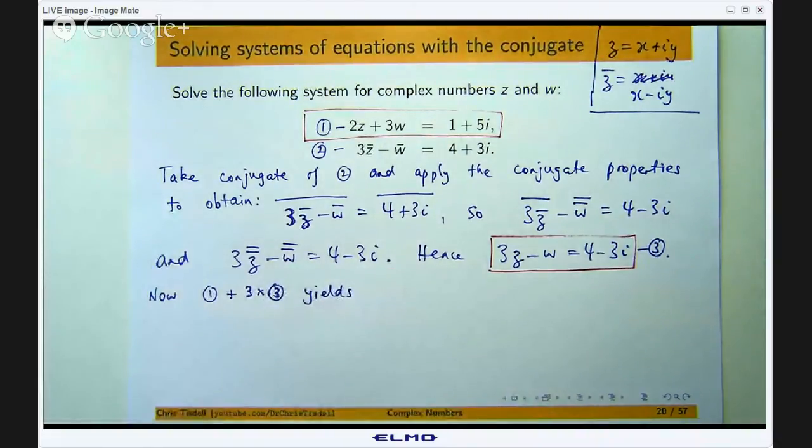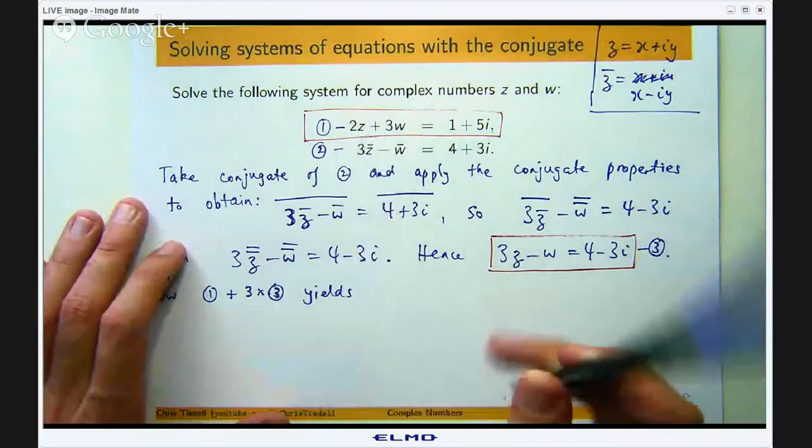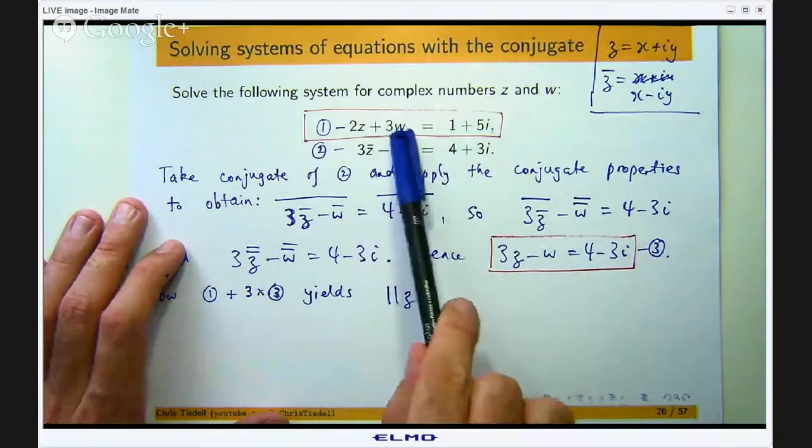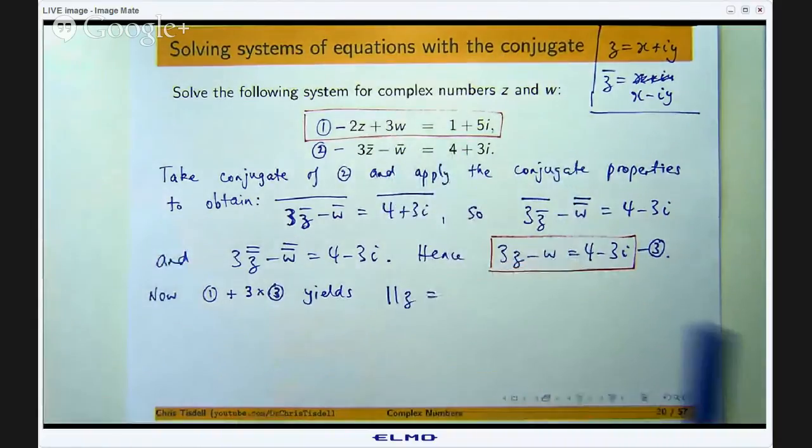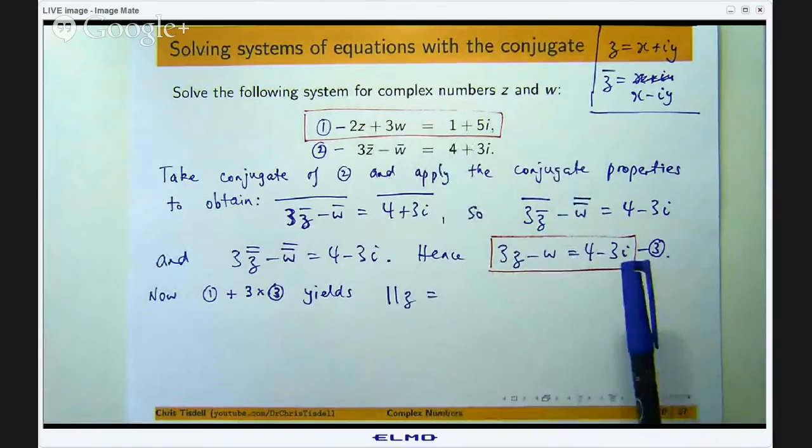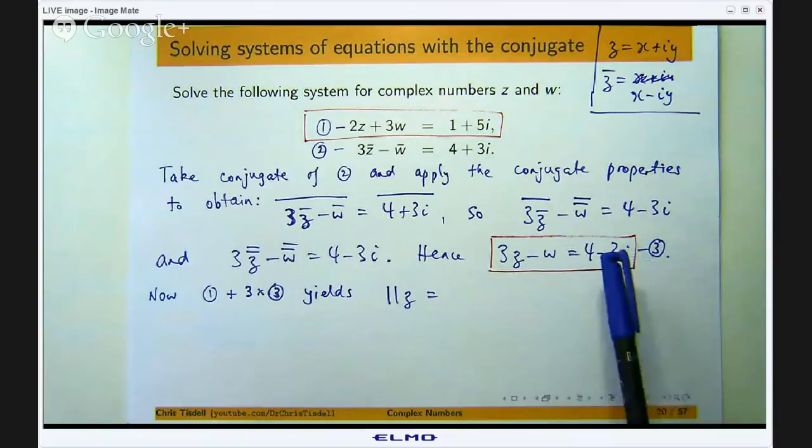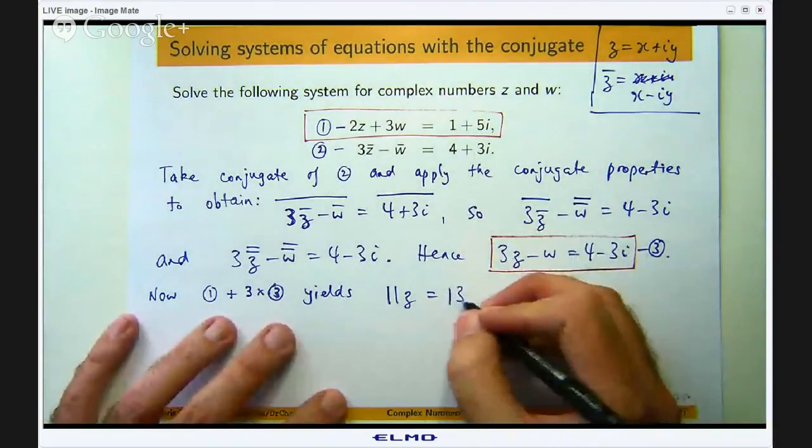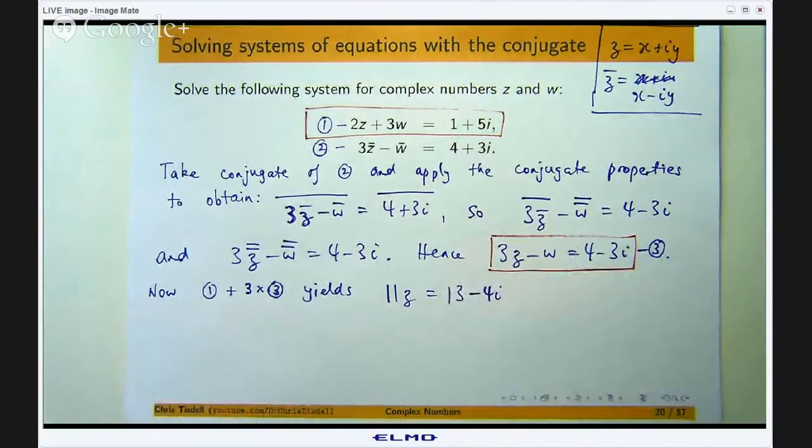Okay so let us take equation 1 and add 3 lots of equation 3 to it. Okay so that is going to give me 9z plus 2z so I am going to get 11z, I am going to get negative 3w plus 3w, they will cancel and I will get 1 plus 5i plus 12 minus 9i. Okay so I will get 13 minus 4i, okay so I can bring the 11 off and isolate the z.